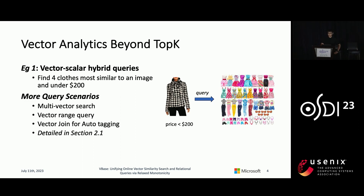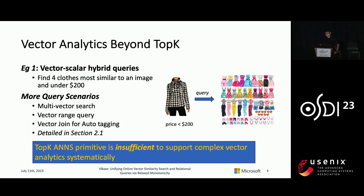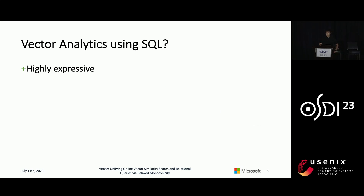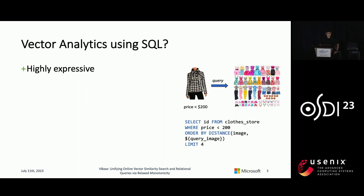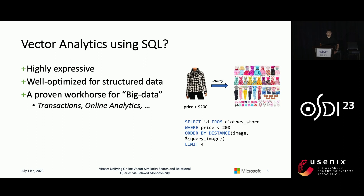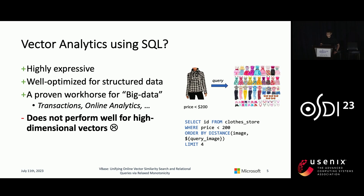Of course, there are more types of query scenarios such as multi-vector search, vector range query, and vector join, which are all detailed in Section 2.1 of our paper. All in all, our investigation shows that the top-K ANN primitive is insufficient to support complex vector analytics systematically. So naturally, people would wonder: why not run vector analytics using SQL? SQL would be highly expressive such that the earlier example of a vector-scalar hybrid query could be expressed easily. However, our investigation shows that running SQL on high-dimensional vectors does not work well, and I will show you why.